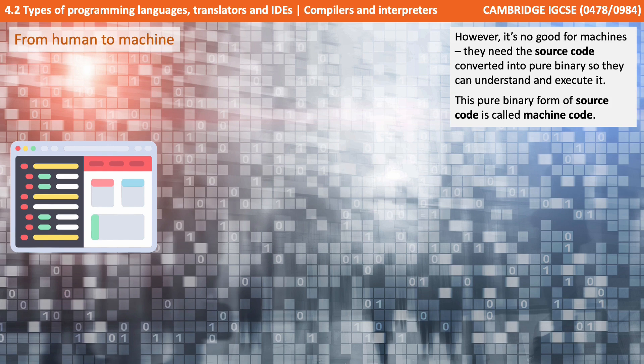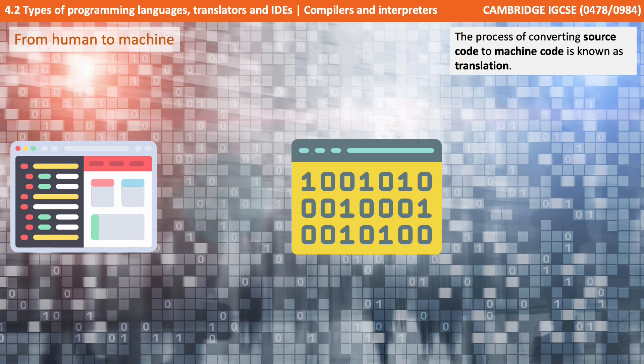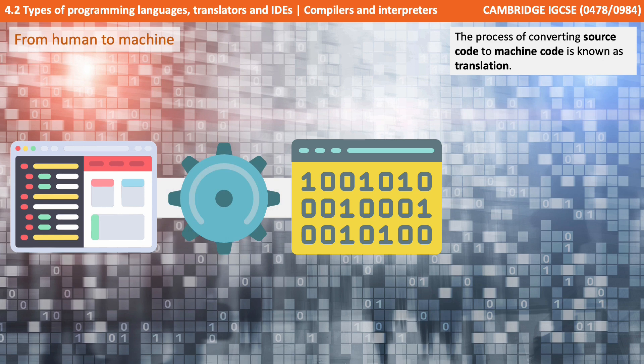However, it's no good for machines. They need the source code converted into pure binary so they can understand and execute it. This pure binary form of our source code is referred to as machine code. The process of converting source code to machine code is known as translation.